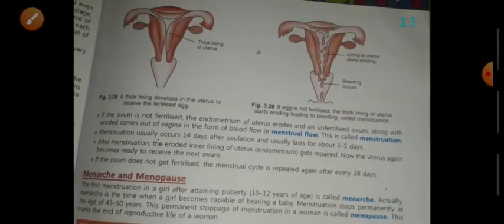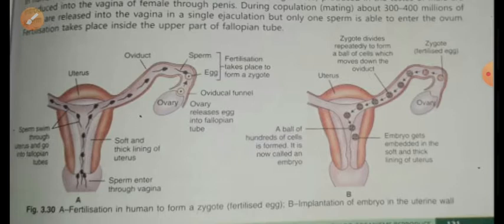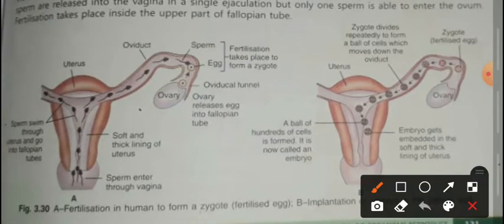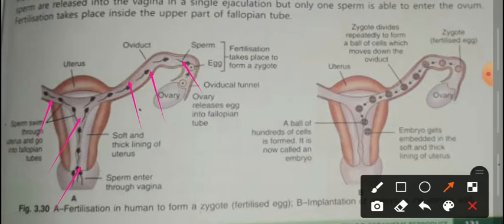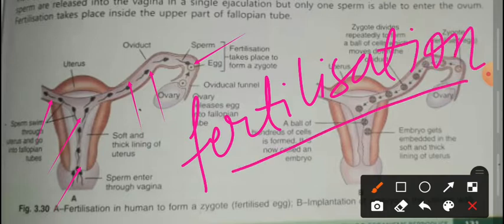If fertilization does not occur in the female, then some changes happen. When fertilization does happen, the sperm is released into the vagina and travels to the fallopian tubes. On the right side of the fallopian tube, the egg and sperm meet. This is the actual site where fertilization takes place — the fallopian tube is the site of fertilization.